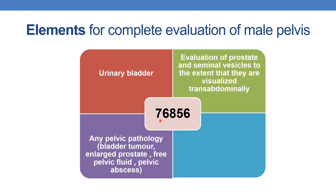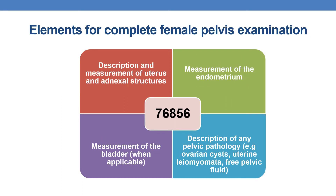One important point is that code 76856 is used for both evaluation of male pelvis and female pelvis. For complete female pelvic examination, you need a description and measurement of uterus and adnexal structures, measurement of the endometrium, measurement of the bladder whenever applicable, and description of any pelvic pathology — for example, ovarian cyst, uterine fibroids or leiomyomata, free pelvic fluid, etc.